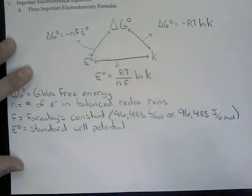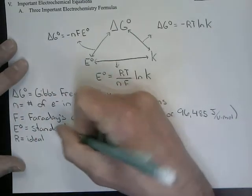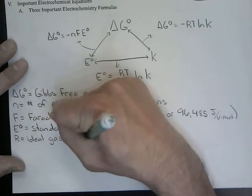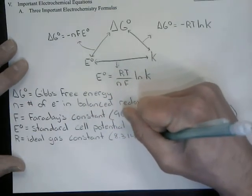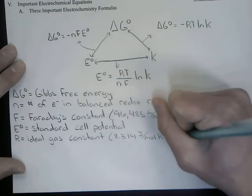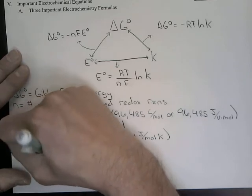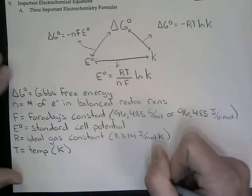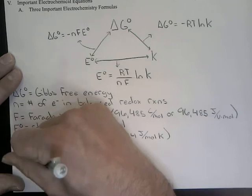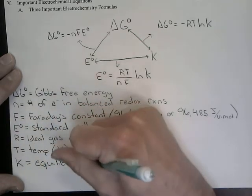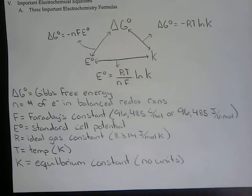R is the ideal gas constant, and we need it in units of 8.314 joules per mole·K. T is temperature, which must be in units of Kelvin. And K is our equilibrium constant — remember, the equilibrium constant has no units.